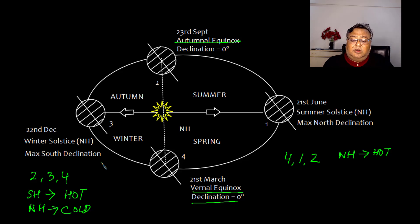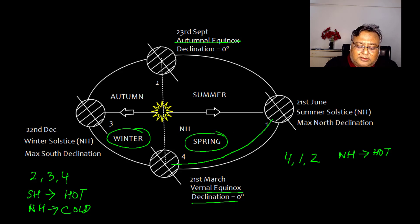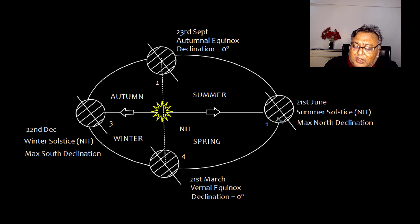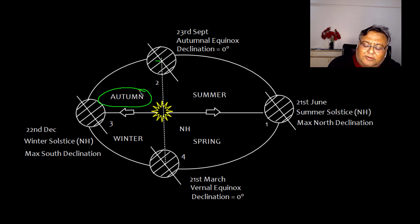Considering the northern hemisphere: starting cold, heat begins building — this is spring. Then the northern hemisphere is fully exposed with maximum declination and lots of heat — this is summer. After 23rd September, the south end tilts towards the sun and the north end moves away, so summer heat starts reducing — this is autumn.